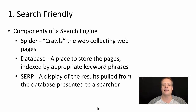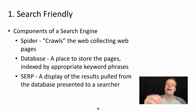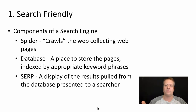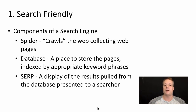The other component is the database. The spider finds a new website, grabs a copy or some summary information about the website, and then stores it in the database. The database is unique — it's not a general database. It's a database where pages are actually indexed by appropriate keyword phrases that people might type in to find that page. The search engine results page is basically a display of those results pulled from the database and presented to a user.